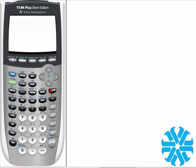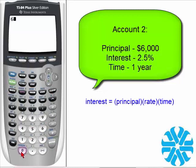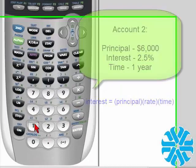Now let's compute the amount of interest in your second account. In the second account you have a principal of $6,000 earning a 2.5% return for one year. So we compute the simple interest: $6,000 multiplied by the interest rate of 2.5% multiplied by the time of the investment, which is one year.